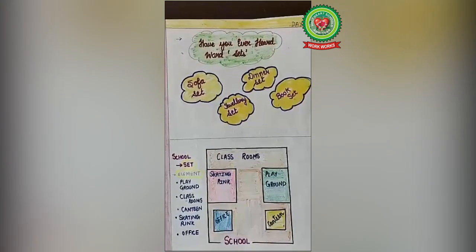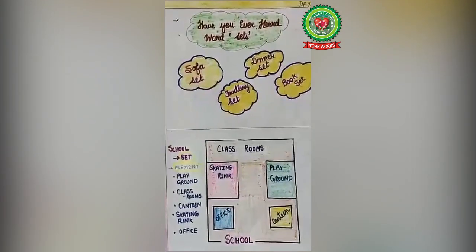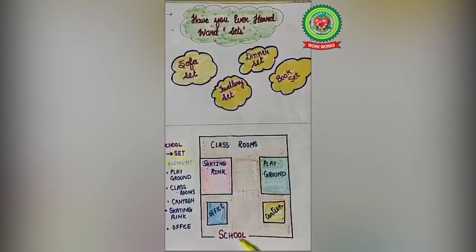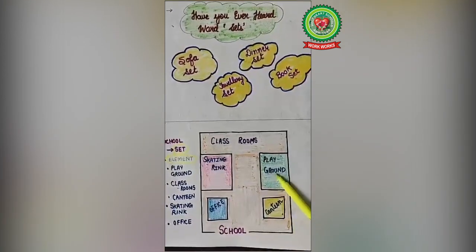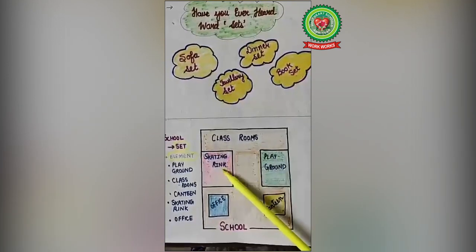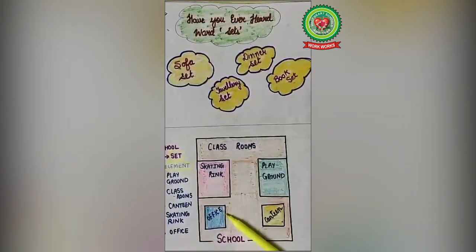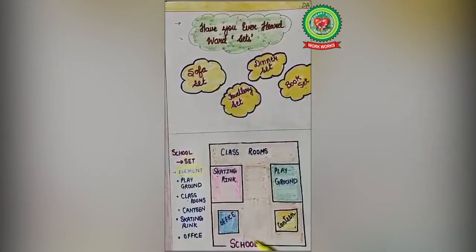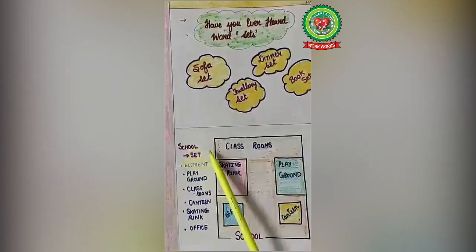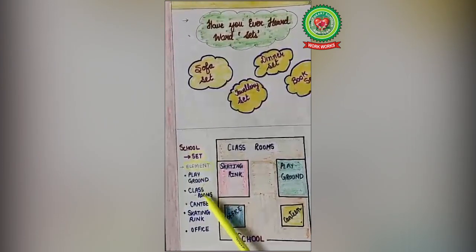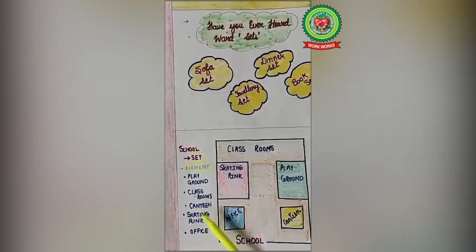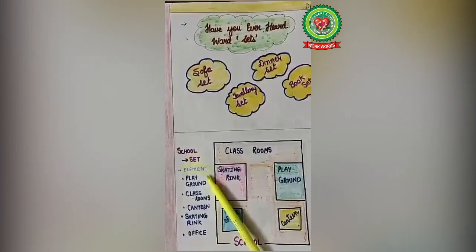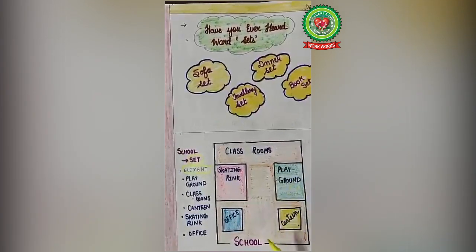Let's discuss another example. As you can see, this is the building of a school. In the school there is a canteen, playground, classrooms, skating rink, office, etc. But on the whole, it is a building of a school. That means school is a set, and playground, classrooms, canteen, skating rink, and office are the elements, members, or points of the set 'school'.